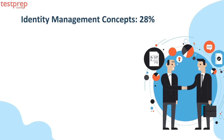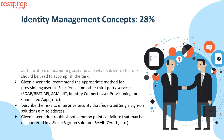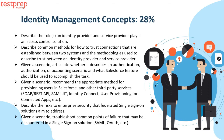Let us now discuss the course outline topics in detail. Number one: Identity Management Concepts, 28%. It contains: first, describe the roles an identity provider and service provider play in an access control solution.